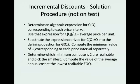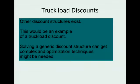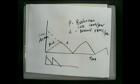Incremental discounts is a lot harder. You've got to come up with an algebraic expression for C of Q, and then you basically solve for the minimum point based on that algebraic expression. Now many other discount structures exist, and a good one is truckload. And I want to talk about this for a second.